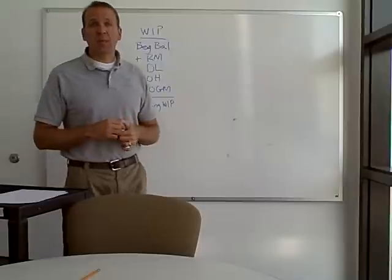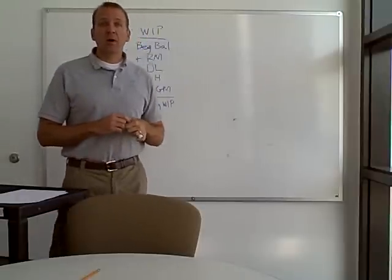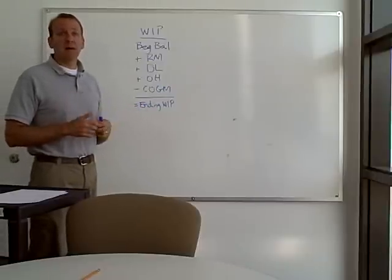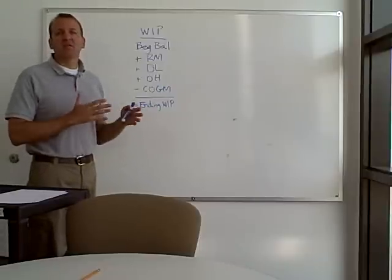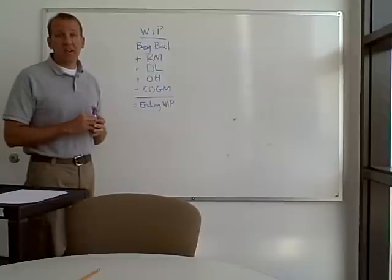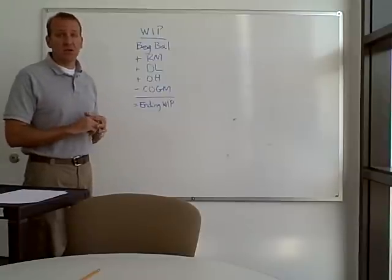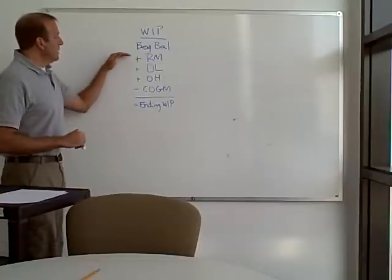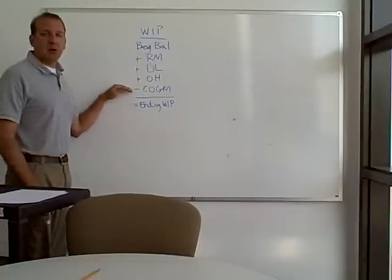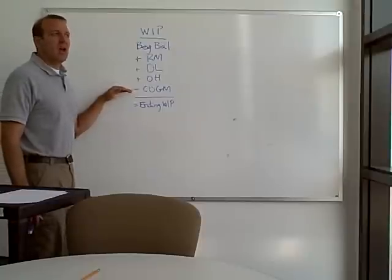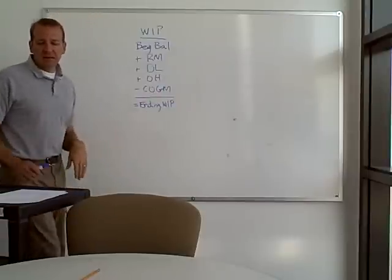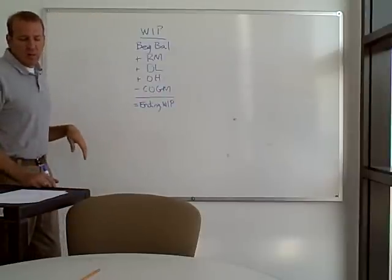We're going to use the same example that we used in our last video where we're making a chair. Our business makes furniture — wooden chairs, but we also make tables. When we've finished a chair, it needs to be transferred out of work in process and go on to the next area, which is finished goods. Let's continue on now with this overhead.